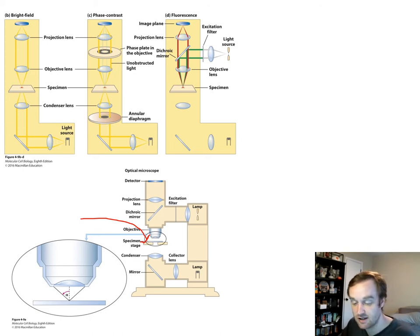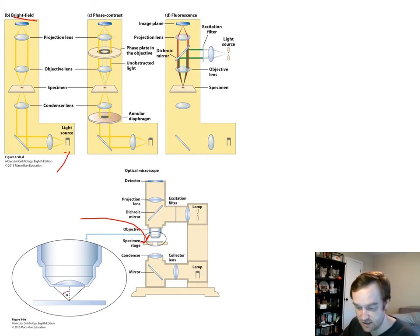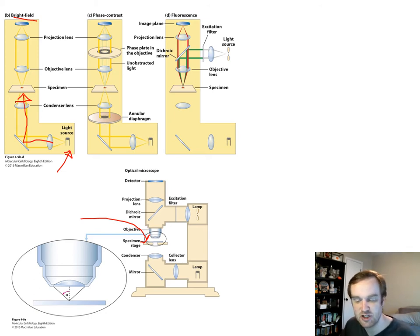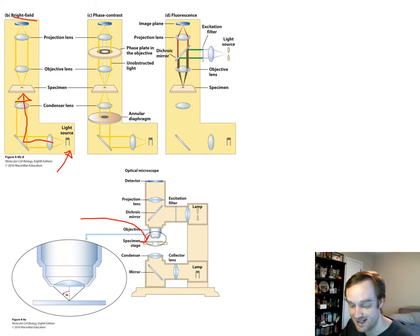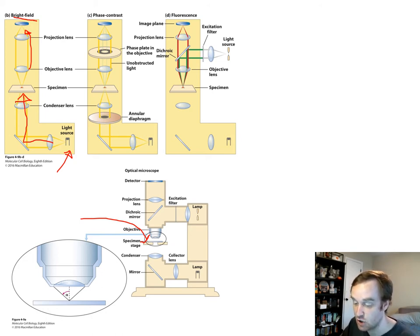In a brightfield microscope, light from a tungsten lamp is focused on the specimen, bouncing off a mirror, with condenser lenses focusing light onto the specimen. Specimens are usually stained with dyes to enhance contrast, and then an objective lens and projection lens allow the light to be refocused into whatever you're recording the image with — your eye or a camera.